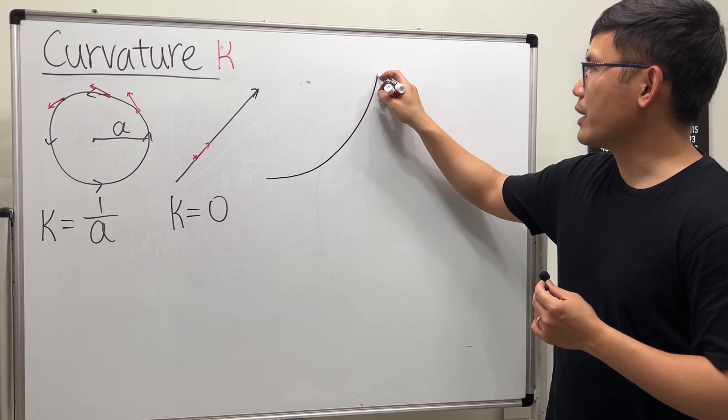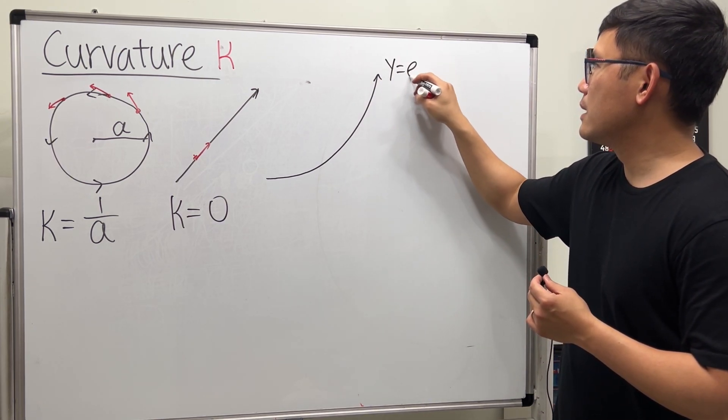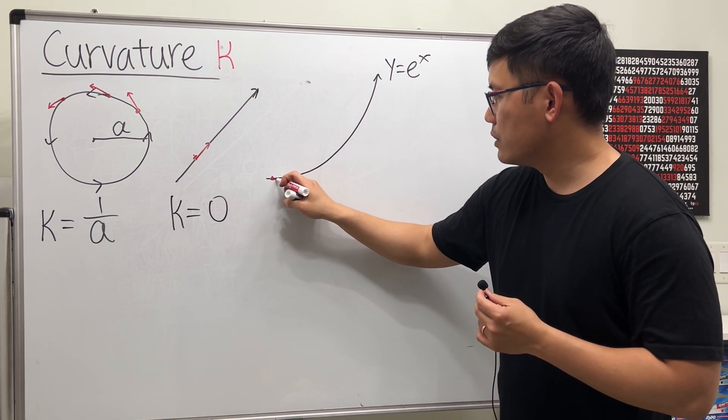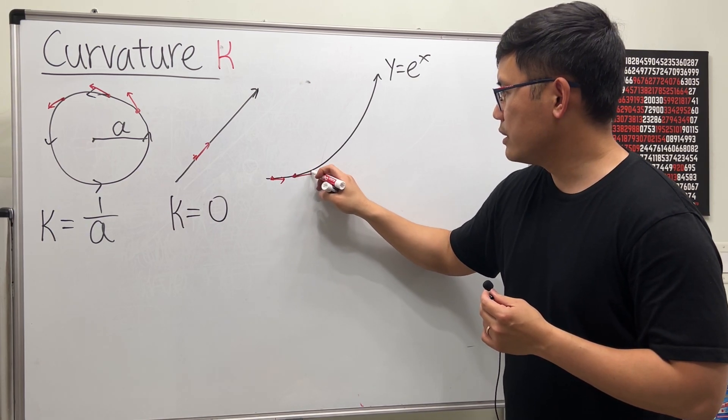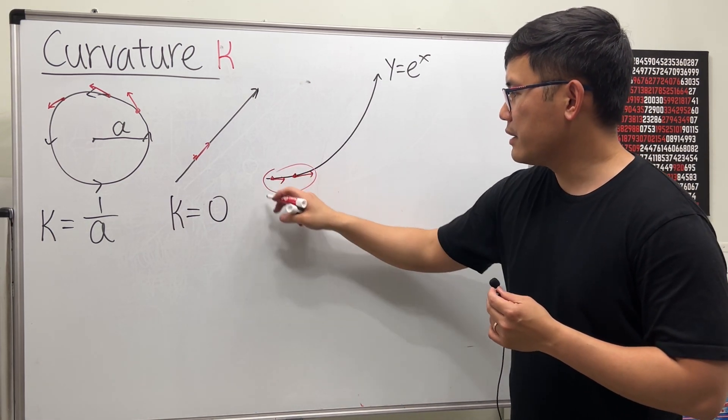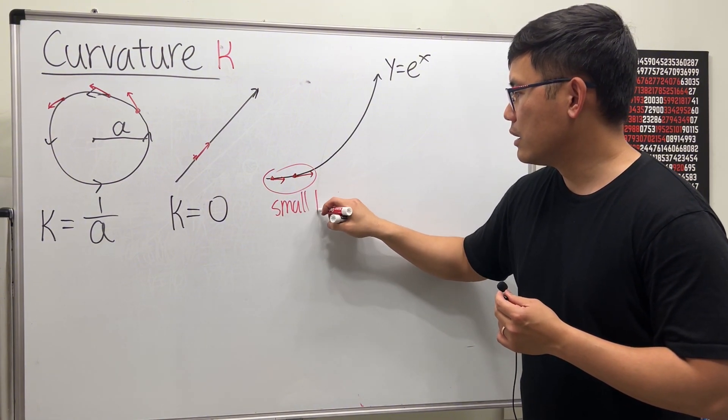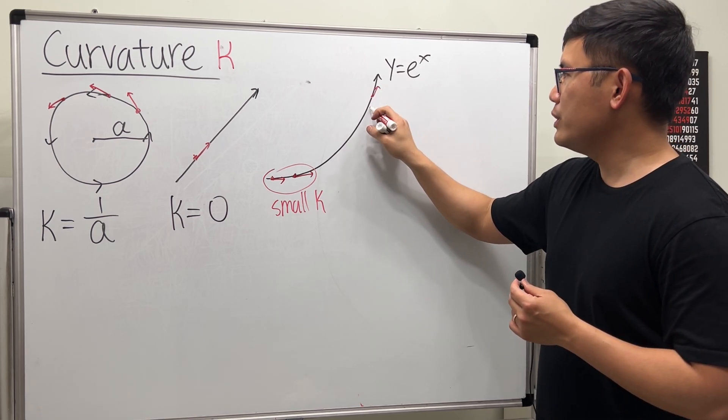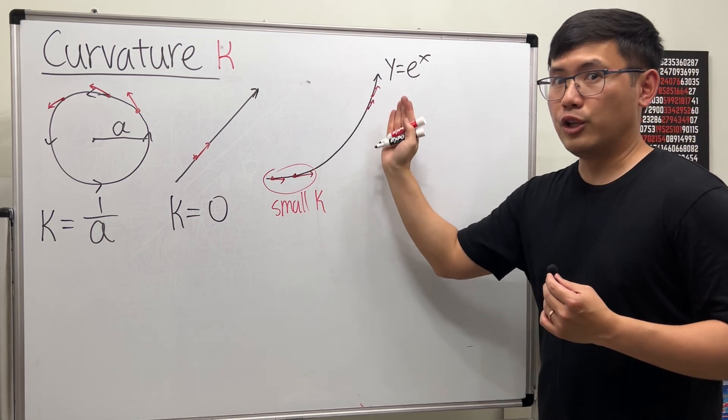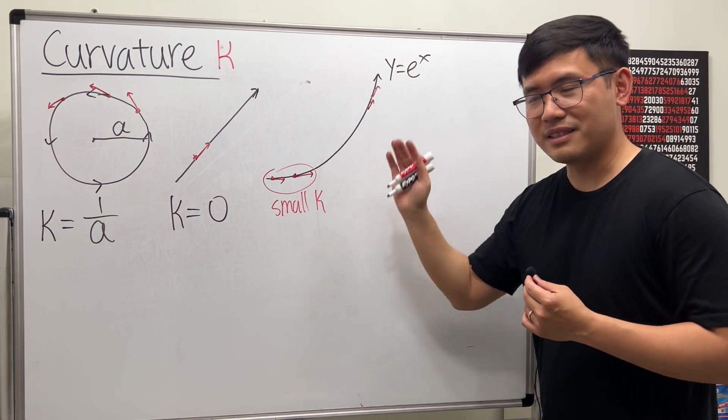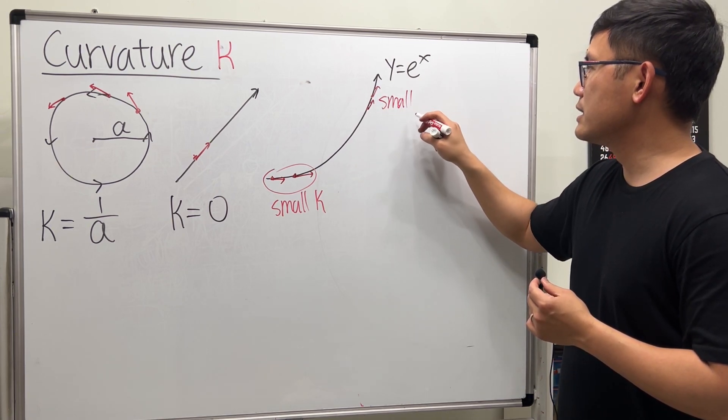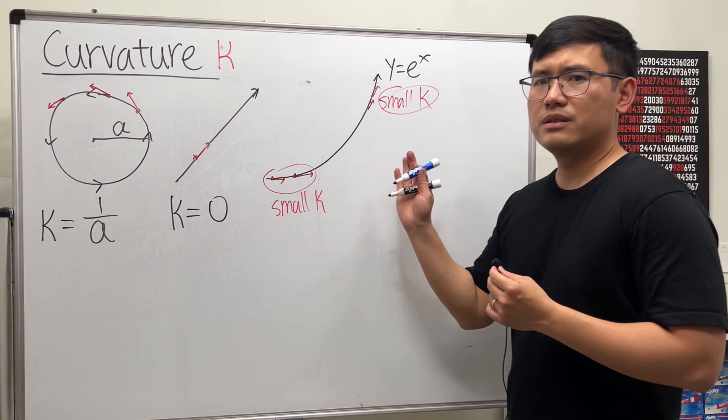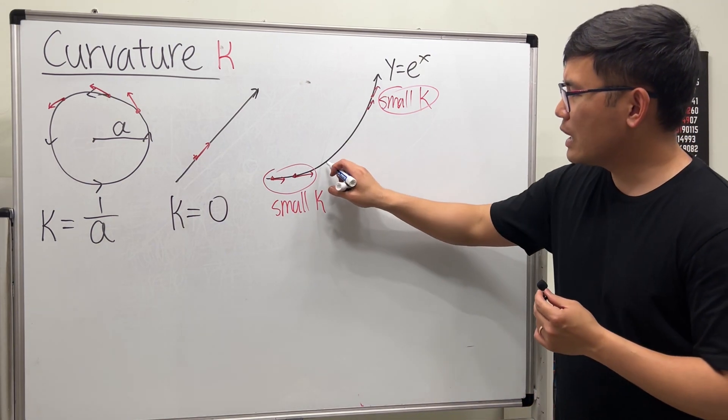For the last one, I want to give you guys this right here, and this is meant to be e to the x. Let's look at this part right here. If you just create the small unit tangent vector, you can see that right here we will have small curvature. Similarly, once we get up here, it does not really bend anymore. But the slope is big—the first derivative is big. But again, that's Calc 1. This also has small curvature.